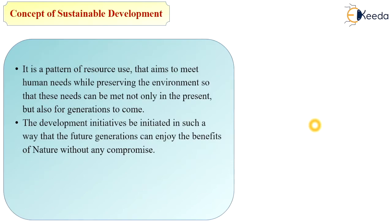For example, if you are planting a small tree, after a few years another generation will get the benefit of that tree in terms of its fruits. So this is a small example of sustainable development — we are taking a small action in the present and in the future other people, or we ourselves, are getting the benefit of it.